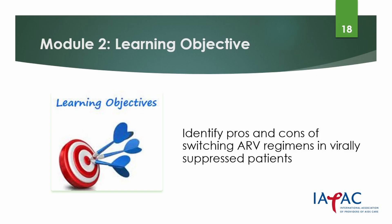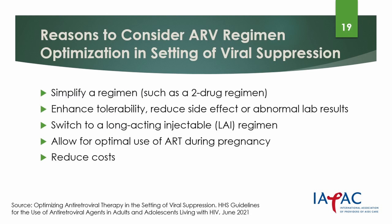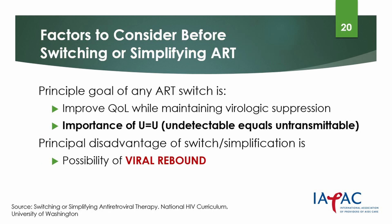Here is the learning objective for the second module. The Department of Health and Human Services panel's recommended reasons for optimizing antiretroviral therapy in the setting of virological suppression are to simplify a regimen such as a two-drug regimen, to enhance tolerability, to switch to a long-acting injectable regimen, to allow the optimal use of ART during pregnancy, and to reduce costs. The principal goal of an antiretroviral therapy switch is to improve a patient's quality of life while maintaining virologic suppression. Viral suppression is key to the U equals U messaging, which we will discuss further in the talk.